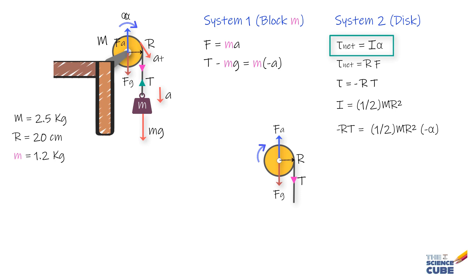we write this equation as minus RT equals half mr square times minus alpha. Remember, the sign of angular acceleration will be the same as the sign of torque, quite the way we say the sign of linear acceleration is the same as the sign of force, which is true because the force and acceleration vectors always point in the same direction.